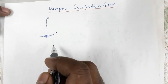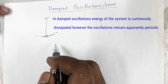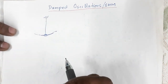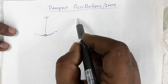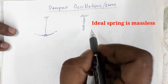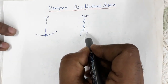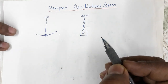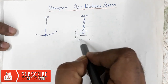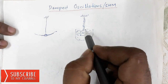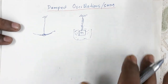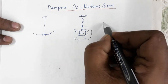In damped oscillation, the energy of the system is continuously dissipated; however, the oscillation remains apparently periodic. For the mathematical treatment of damped oscillation, consider a fixed rigid support with an ideal string whose free end is connected to a block of mass m. This block is surrounded by a resistive medium and oscillates within it.